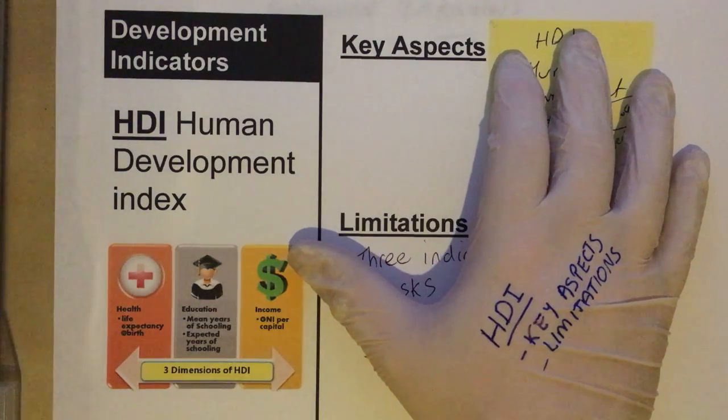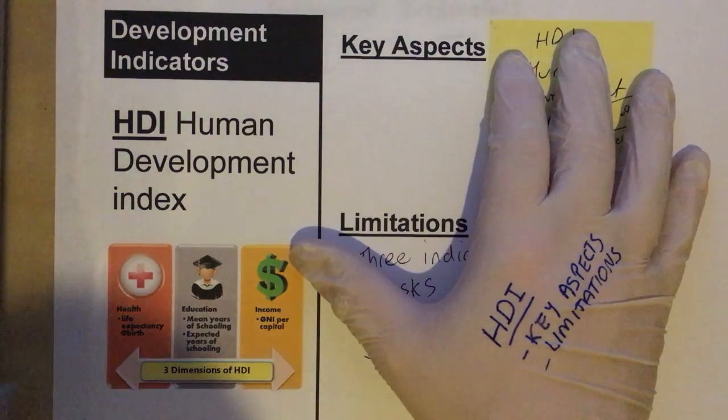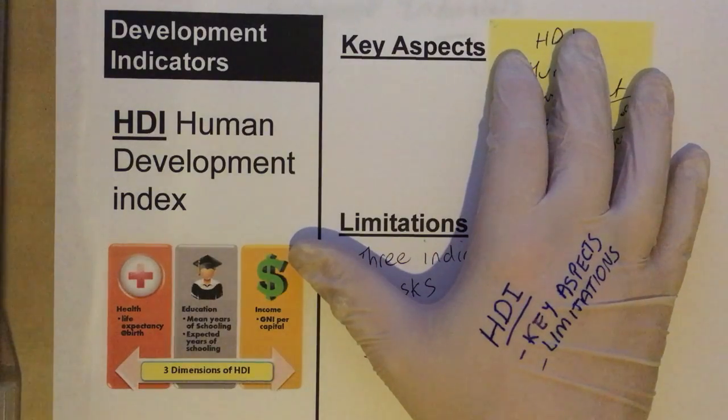Hi, welcome to this episode of White Corp Geography. Today we're going to look at development indicators, in particular HDI.